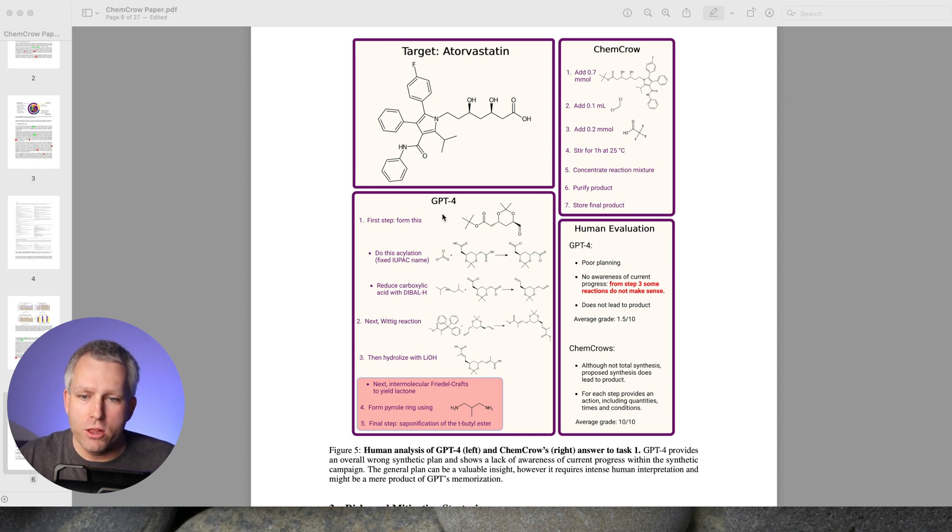On the other hand, here is ChemCrow. It gave you this molecule, and then it gives you several steps on how to get to the final product. And here's the important part, the human evaluation. So they took a chemist, and they looked at the output from GPT-4 and ChemCrow. For GPT-4 in this particular case, poor planning, no awareness of the current progress. I also found that when I was testing myself, it just gets stuck. It just gives you gibberish. It hallucinates all the time.